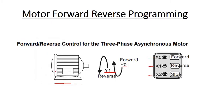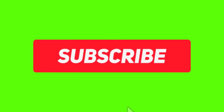We will take one three-phase motor and operate it in forward and reverse direction. For forward we will use Y0 contactor and Y1 for reverse operation. Push button X0 is for forward operation, X1 is for reverse operation, and X2 is the stop push button. Before moving to programming, if you are new on the channel hit the subscribe button and turn on notifications.